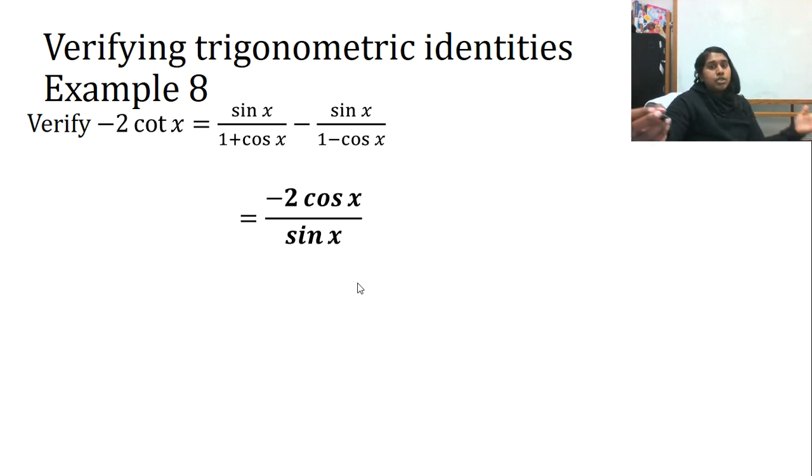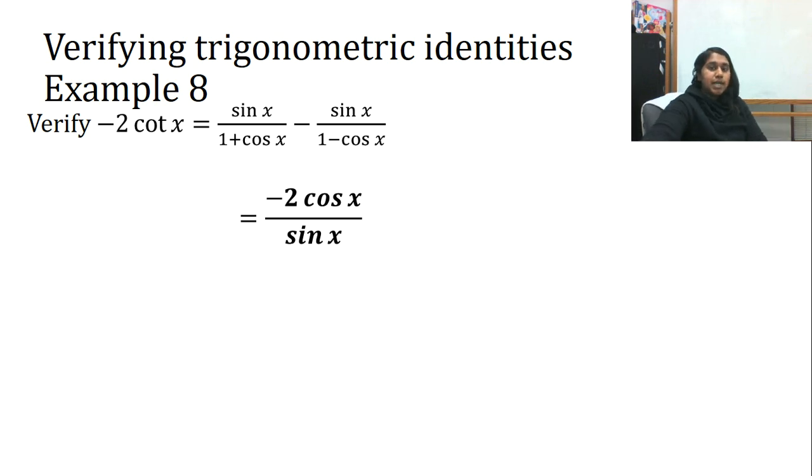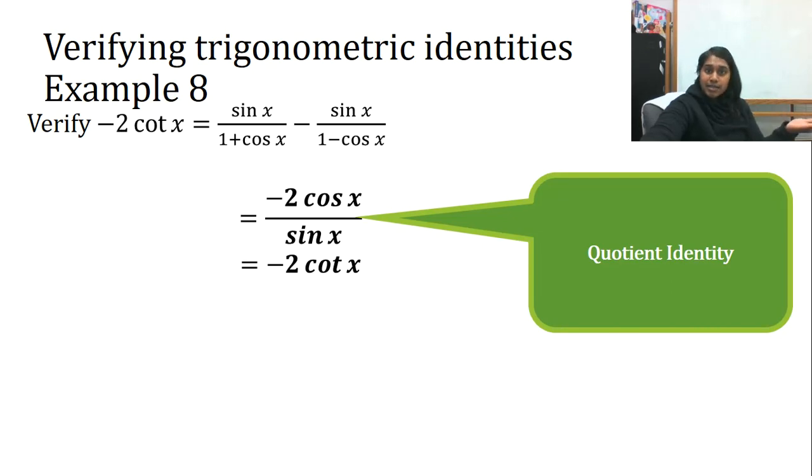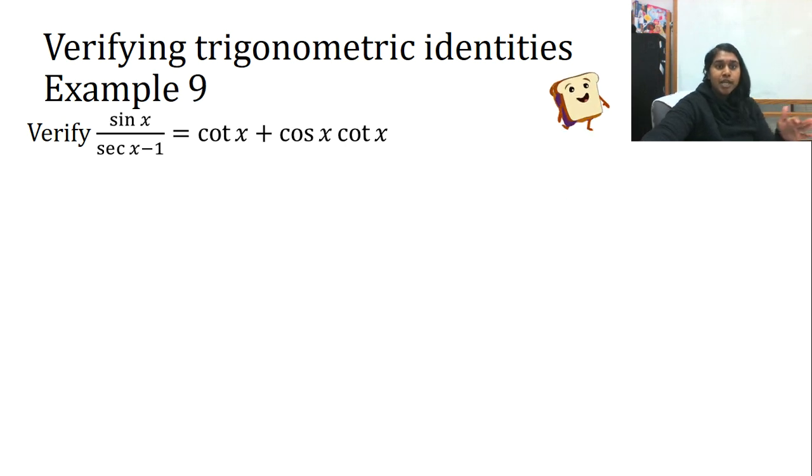So now I'm down to negative two cosine x over sine x. That looks really close to my end answer. So what do I see? I see the quotient identity. Cosine over sine is cotangent. So I replace - I have finished my verification.